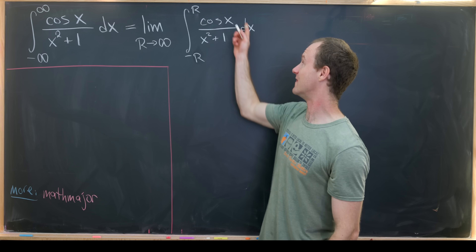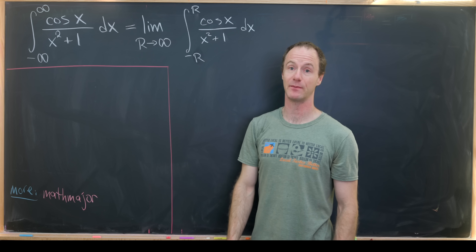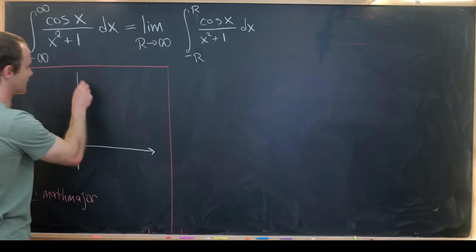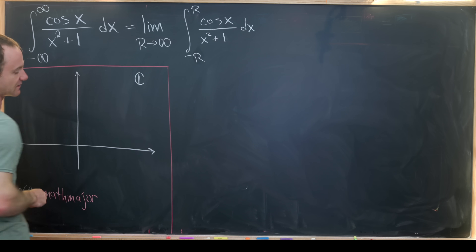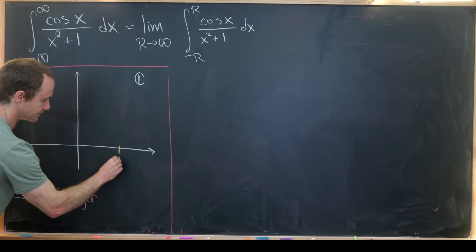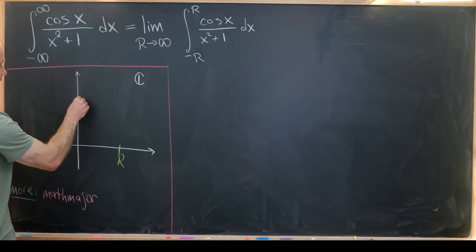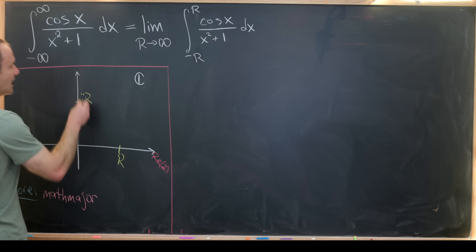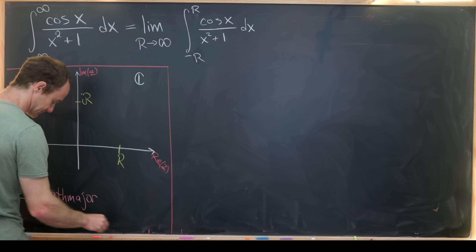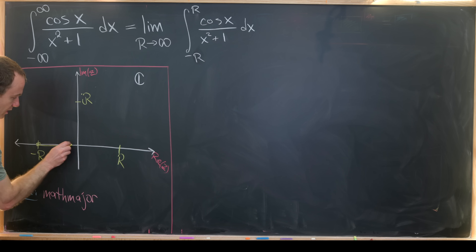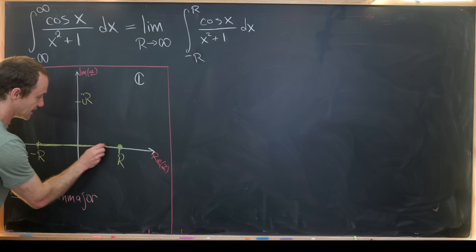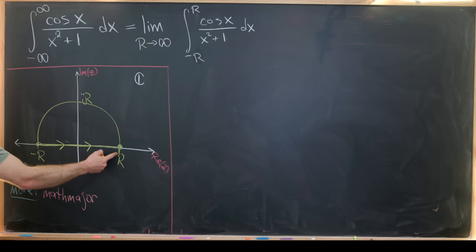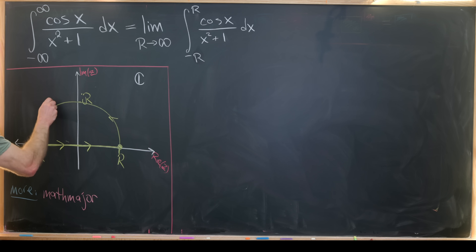Now we're going to look at this portion as just part of an integral happening in the complex plane, over a commonly used contour. Think of this as the complex plane: we go over to R, back to minus R on the real axis, and then up to i times R. We integrate from minus R to positive R along the real axis, and then over a semicircle that goes back through iR to minus R.